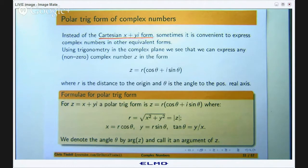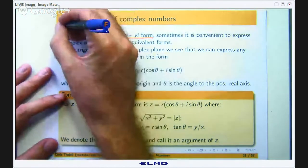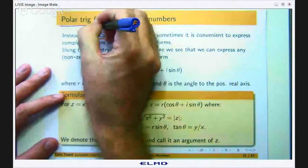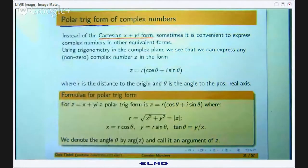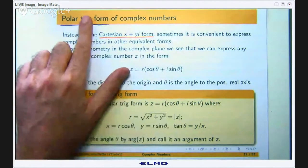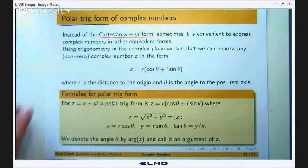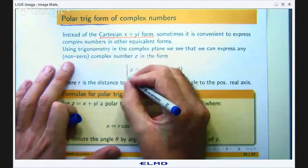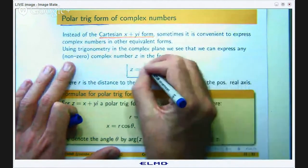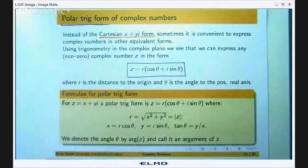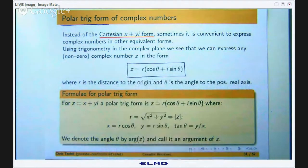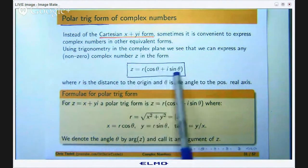We are going to introduce a new way of writing a complex number called the polar trigonometric form or just the polar trig form for short. Some books call it the polar form but to be definite I am going to call it the polar trig form. Let us talk about what the form is. I can write each complex number in terms of a length which is going to be r and an angle theta.